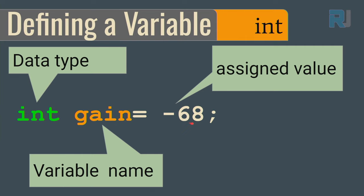For variable names, you cannot use just any word — there are some limitations. For example, you cannot use int as a variable name because it's a reserved keyword. You cannot start a variable name with a number — numbers must be at the end or in the middle. You cannot use loop because it's a reserved word for Arduino. You cannot use void because it is also reserved. You cannot use a dot in the variable name, for example age.me, because dot is not allowed.